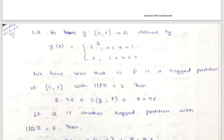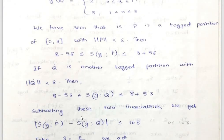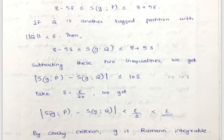Let g from [0,3] to ℝ be defined by g(x) = 0 for 0 < x < 1 and g(x) = 3 for 1 < x < 3. From the previous question, if P-dot is a tagged partition of [0,3] with norm of P-dot less than delta, then 8 − 5·delta < S(g, P-dot) < 8 + 5·delta. For Q-dot another tagged partition, |S(g, P-dot) − S(g, Q-dot)| < 10·delta. Setting delta = epsilon/28, we get |S(g, P-dot) − S(g, Q-dot)| < epsilon/2.